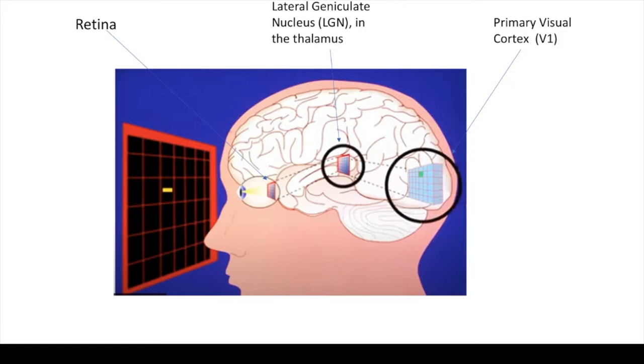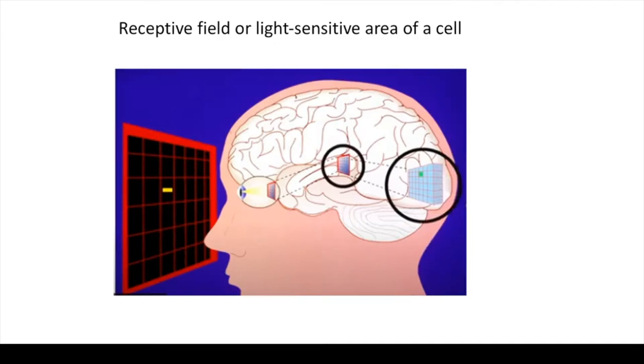Remember the early stages in the processing of visual information. The light hits the retina, and the retina sends its outputs to the lateral geniculate nucleus of the thalamus, which is a sort of relay station between the eye and the primary cortex.